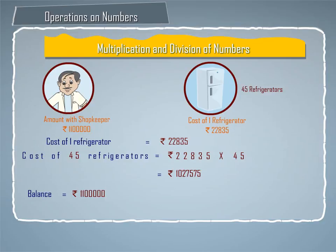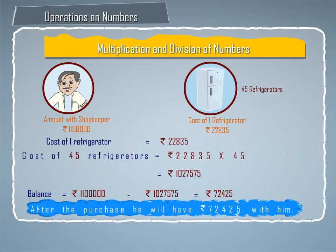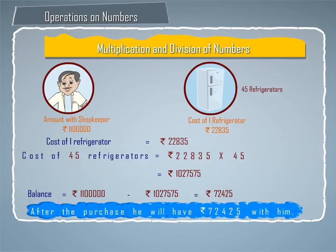Balance is equal to rupees eleven lakh minus rupees ten lakh twenty seven thousand five hundred seventy five, which is equal to rupees seventy two thousand four hundred twenty five. Hence the solution sentence is: after the purchase, he will have rupees seventy two thousand four hundred twenty five with him.